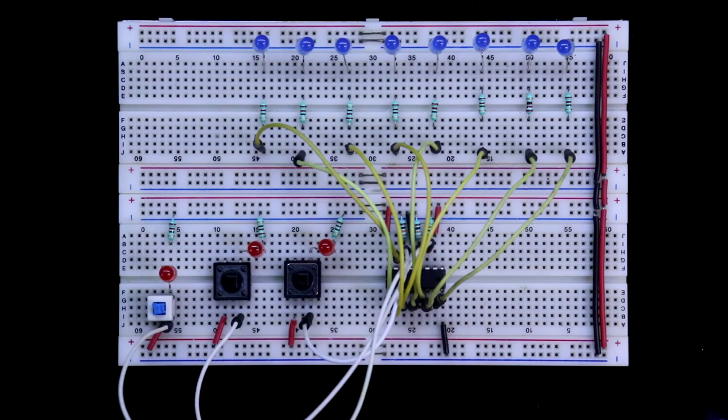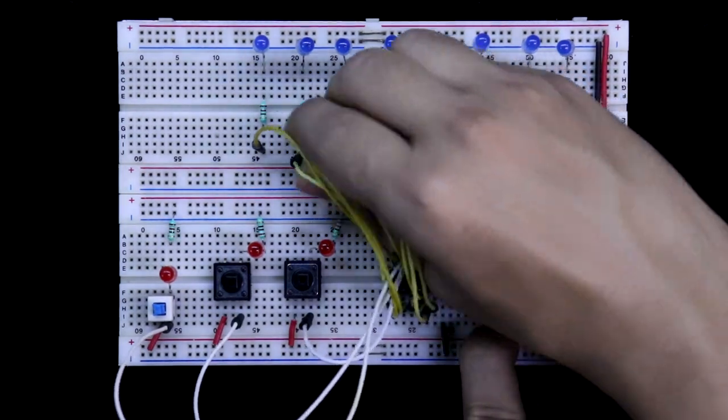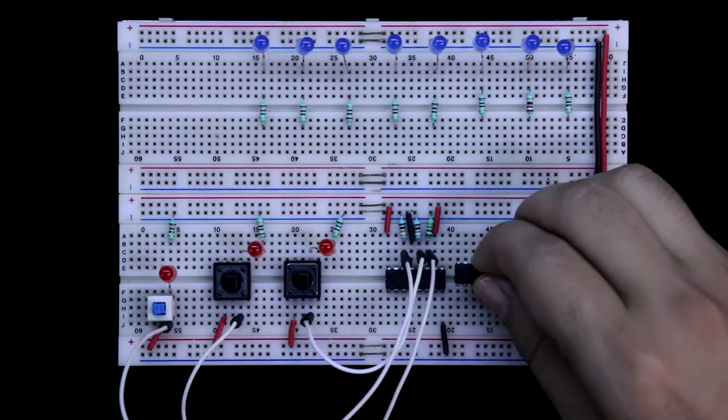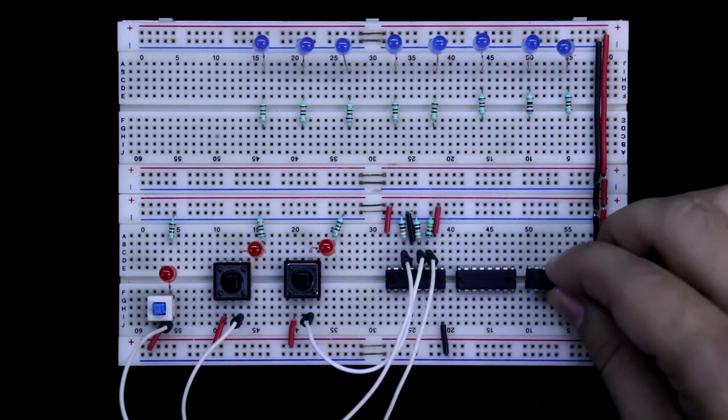We already seen up to this. In this circuit, we will add two more ICs. Now I am disconnecting all the outputs. Now only inputs are connected. Now I am adding two more ICs.